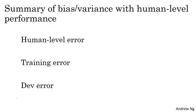So just to summarize what we've talked about, if you're trying to understand bias and variance where you have an estimate of human-level error for a task that humans can do quite well, you can use human-level error as a proxy or as an approximation for Bayes error. And so the difference between your estimate of Bayes error tells you how much avoidable bias is a problem, how much avoidable bias there is, and the difference in training error and dev error tells you how much variance is a problem, whether your algorithm is able to generalize from the training set to the dev set.